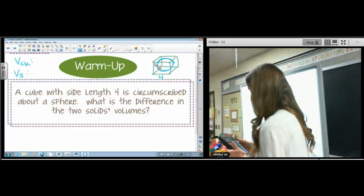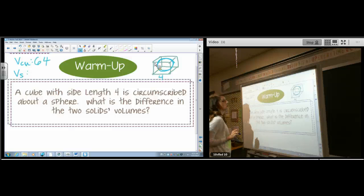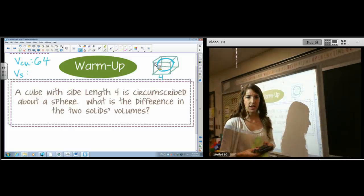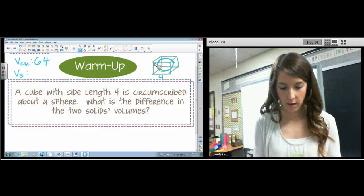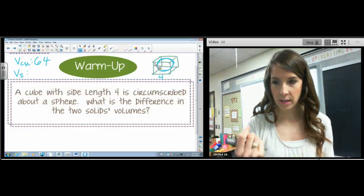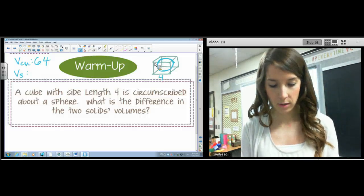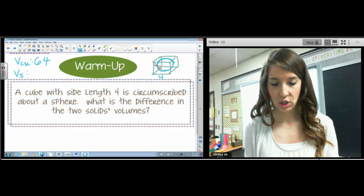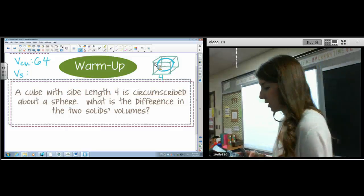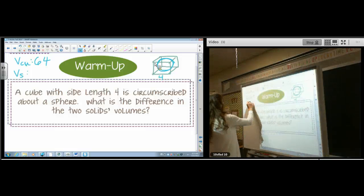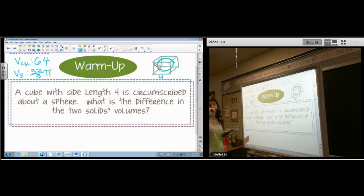4 cubed, that's the side, to find the volume of a cube. Very good, 64. The volume of the sphere: 4 thirds pi r cubed. So 4 thirds times 2 to the third. Math enter, enter. 32 thirds pi.